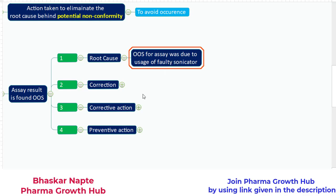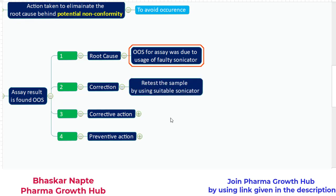So what is the correction? Correction is just to correct the non-conformity. The non-conformity here is the faulty sonicator. How you are going to correct this? Retest the sample by using a suitable sonicator — you are not going to use the faulty sonicator anymore, but a sonicator which is performing well. The extraction will happen as usual and your assay result will not be out of specification. This is the correction.